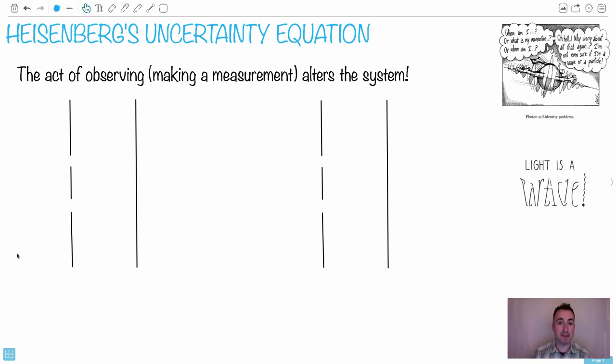Heisenberg's uncertainty equation is one of my favorite equations. If you can have a favorite, it's mine. It's really deep, actually, what it ends up meaning. Even though the equation itself looks really, really simple.